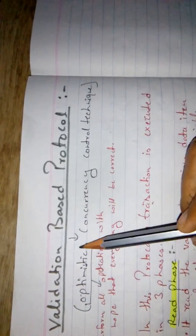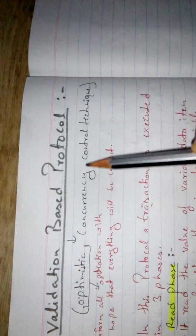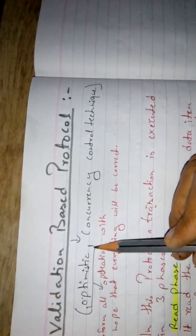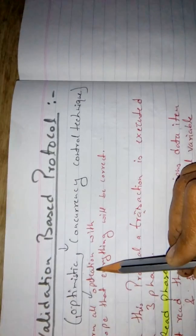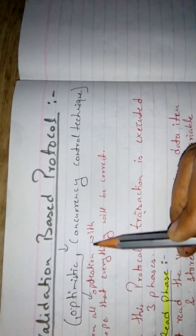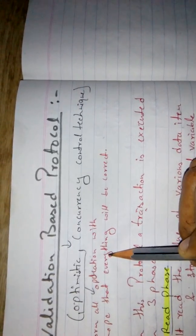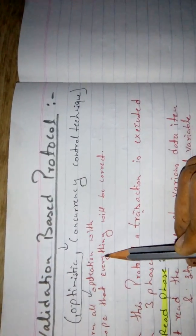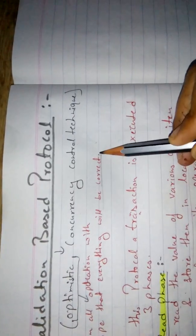Validation-based protocol is also called the optimistic concurrency control technique. We call this optimistic because every operation we perform, all the operations we perform, are assumed to be correct.